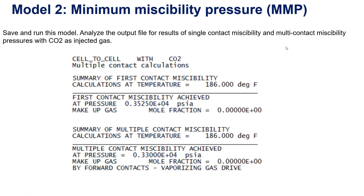After you perform the previous steps, run the model. You analyze the output file for the results of the single contact MMP and multiple contact MMP calculations with carbon dioxide and injected gas. In the simulation output file, you will see this value for your reference. You will find information about the cell-to-cell with CO2 and the multiple contact calculation.